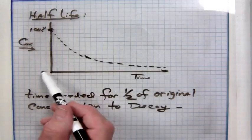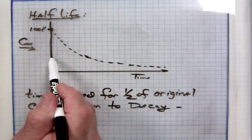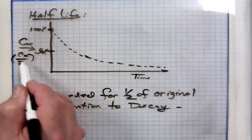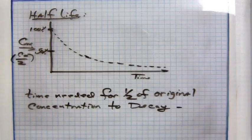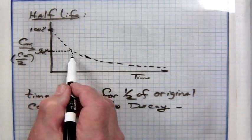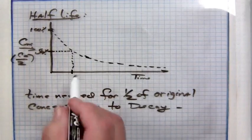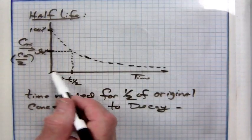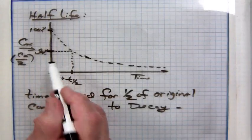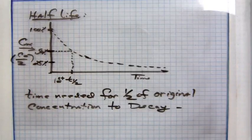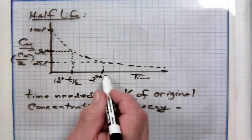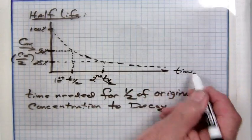We're going to use this to calculate the final concentration at two hours. Notice the K value is in seconds, so hours need to be converted to seconds — that's 3,600 seconds per hour, giving 7,200 seconds. Applying this data to the first-order equation: C-final equals the initial 0.0248 molar times E to the negative bracket K value 2.2 times 10 to the minus 5 reciprocal seconds times 7,200 bracket. The units of seconds cancel out.